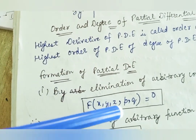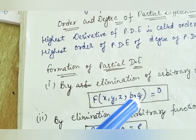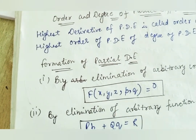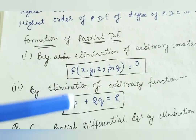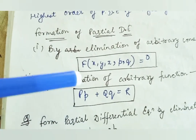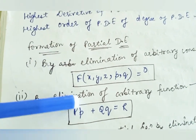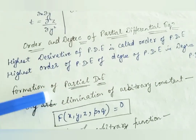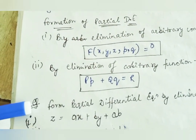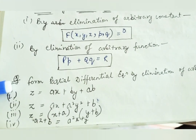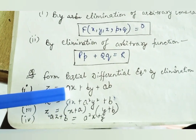To solve a partial differential equation, if the order is 1, we use P and Q. Eliminating P and Q is the Lagrange method. For first order PDEs, we solve them using this method. The first method is formation of a partial differential equation by elimination of arbitrary constants.